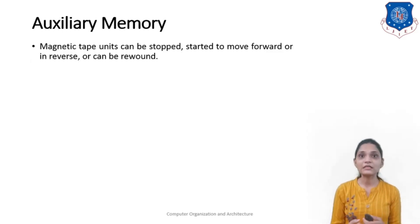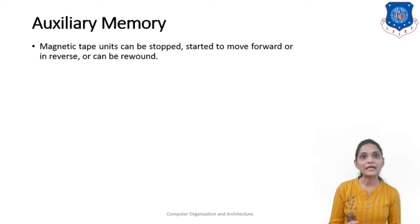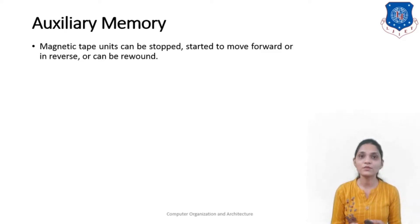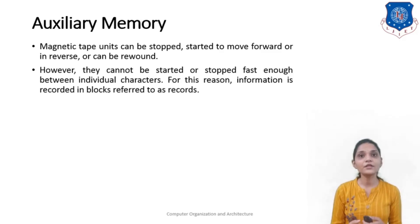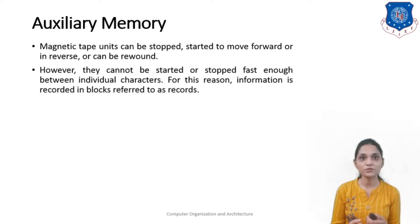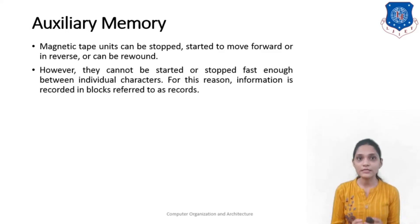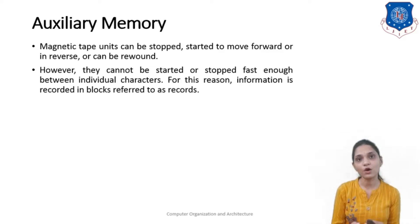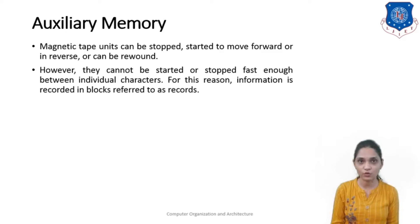Read/write heads are mounted on each track so that data can be read and written as a sequence of characters. The magnetic tape unit can be stopped, started to move forward, reversed, or rewound. However, it cannot be restarted or stopped fast enough between individual characters. For this reason, information is recorded in blocks, also referred to as records.